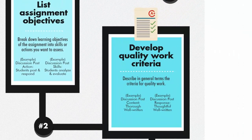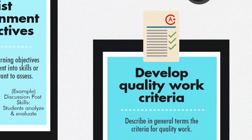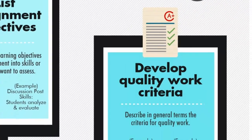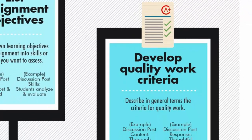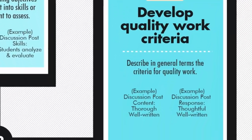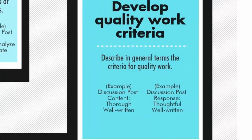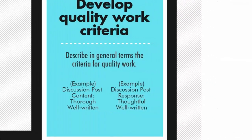Step 2: Develop Quality Work Criteria. Describe in general terms the criteria for quality work. For example, Discussion Post Content should be thorough and well-written, and the Discussion Post Response should be thoughtful and well-written.